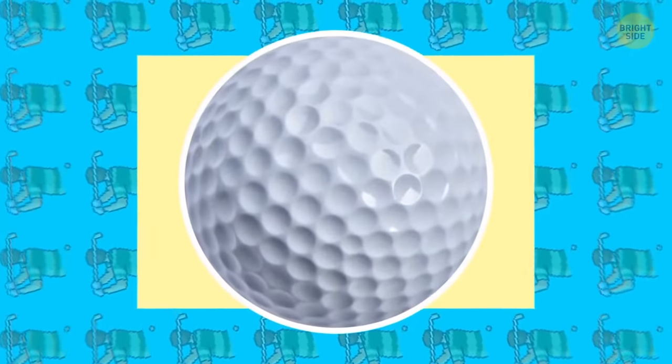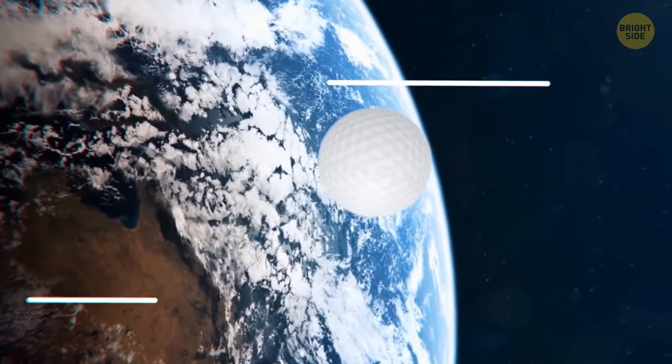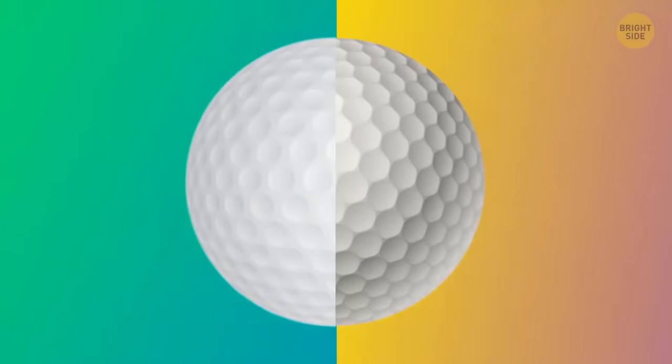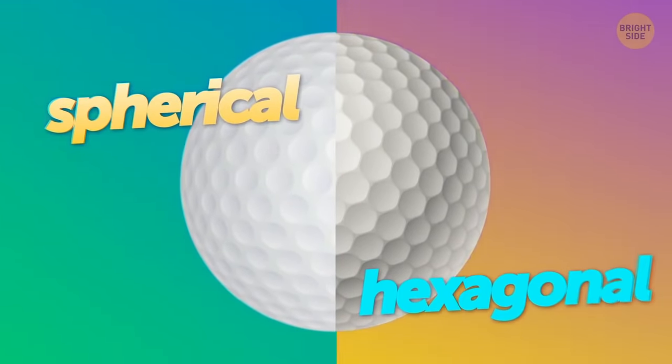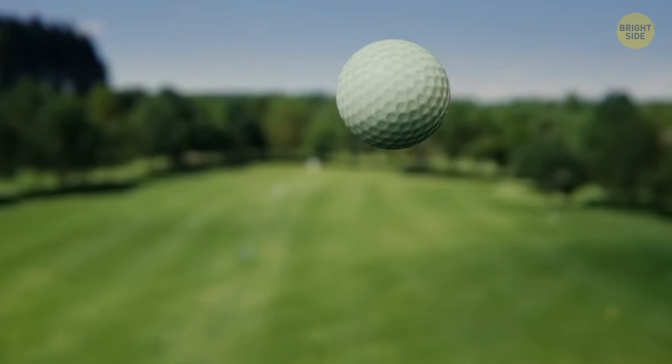Those tiny dimples on golf balls actually give a greater lift to the ball and reduce air resistance, meaning the ball can go further with them. These dimples come in spherical and hexagonal shapes with each slightest change affecting the ball's performance. So choose them carefully.